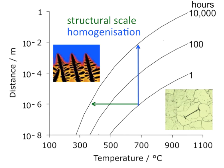Alternatively, if I want to homogenize the material — because every commercial material contains variations in chemical composition — those variations happen over various length scales. For special steels like bearing steels still made by ingot casting, you can have segregation over a distance of a meter. If you have segregation over a meter, you require a very large amount of time to eliminate it — so you don't actually bother, because it's just too long for diffusion to homogenize the material.